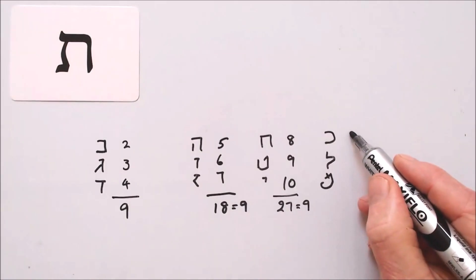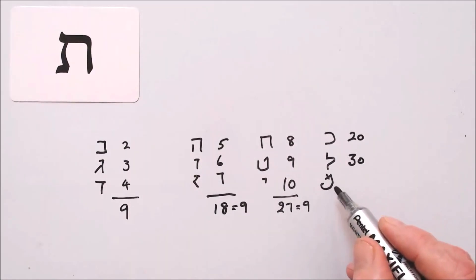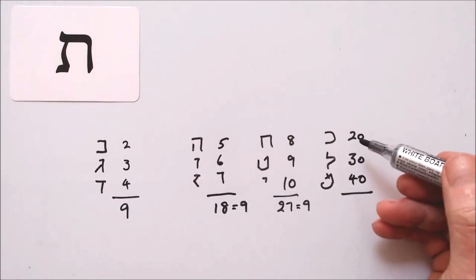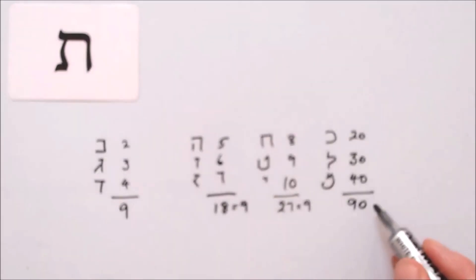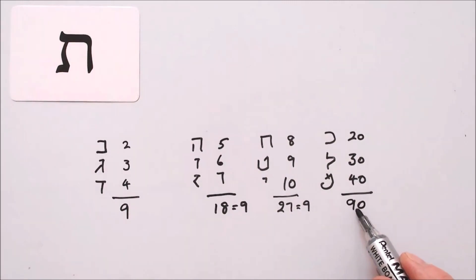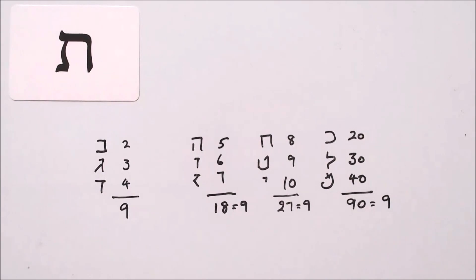Kaf is twenty, Lamed is thirty, Mem is forty. Making twenty, fifty, ninety. To get the digit sum, we add nine and zero equals nine. The digit sum of all these groups of three is nine.